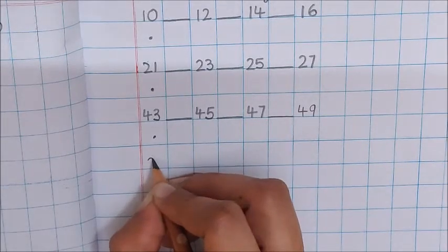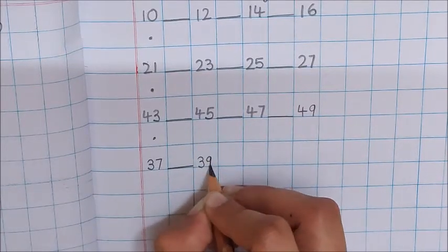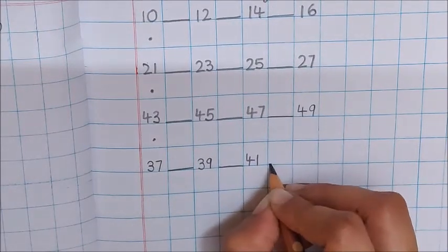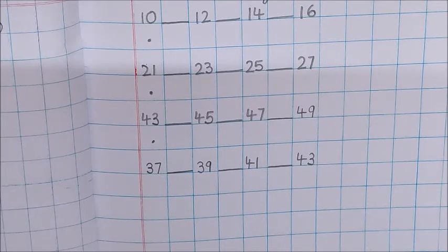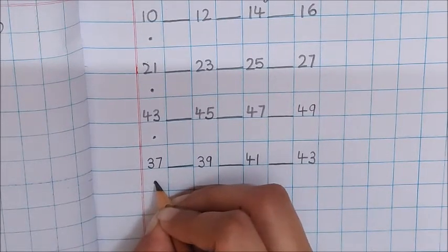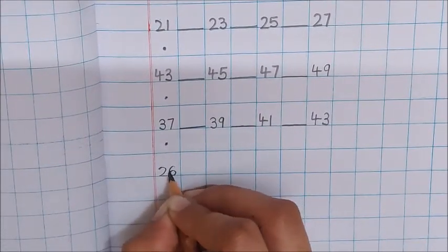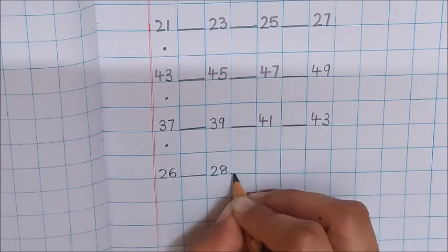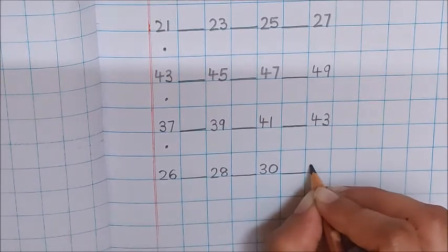And write down here 37, dash, 39, dash, 41, dash, 43. And in the last row, 26, dash, 28, dash, 30, dash, 32.